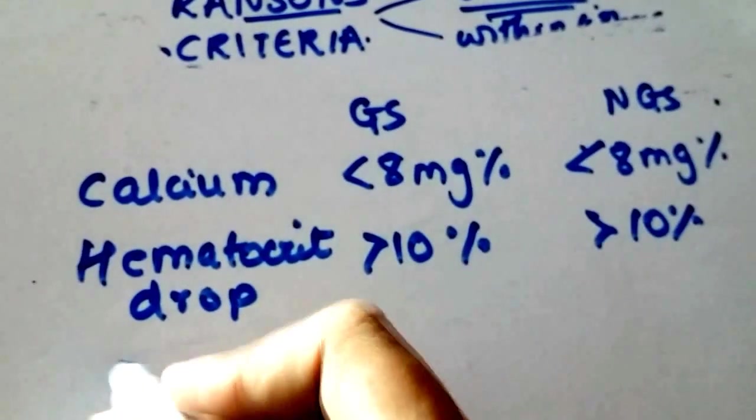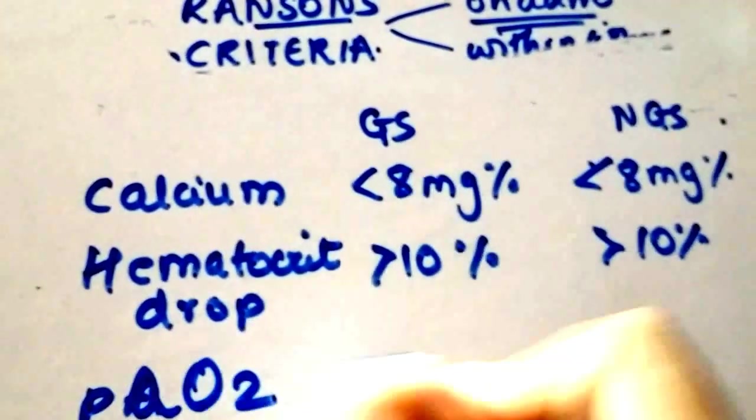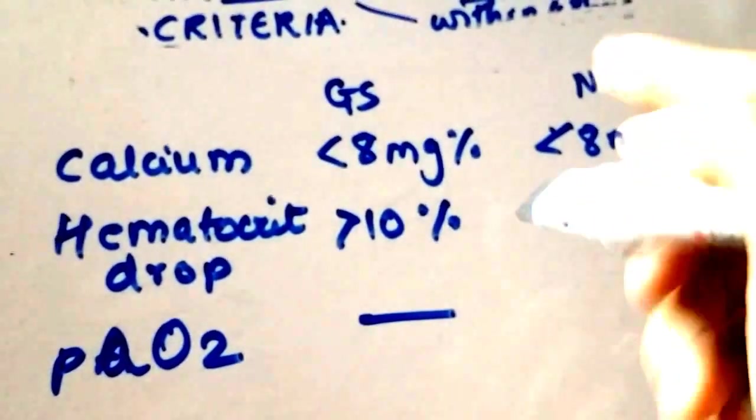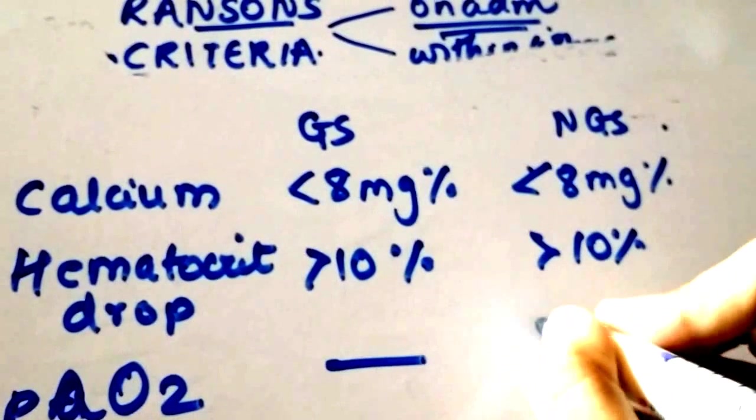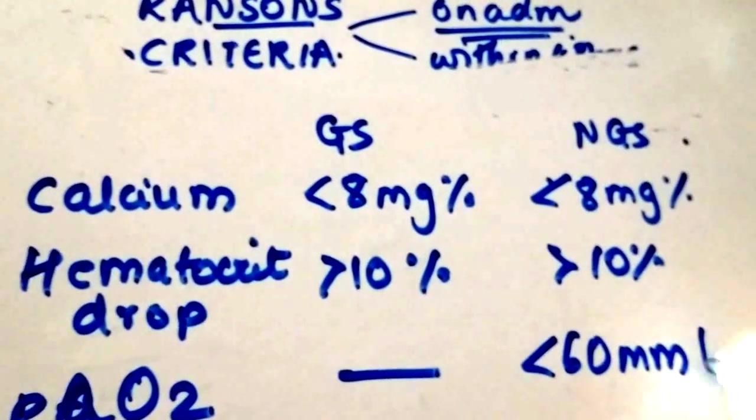O stands for oxygen, PaO2. And it's not there in the gallstone criteria. It's there only in the non-gallstone criteria and it's less than 60 millimeters of mercury.